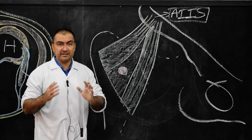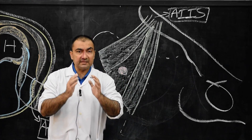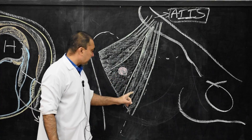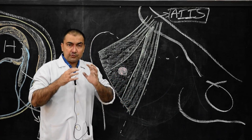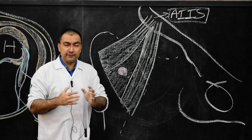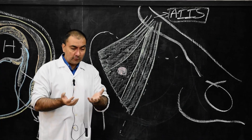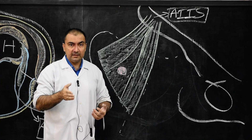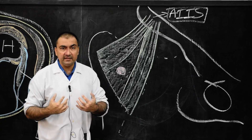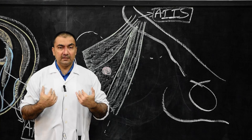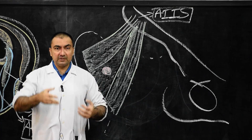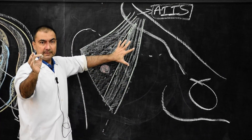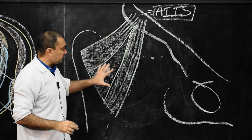The iliofemoral ligament prevents hyperextension of the hip joint. It also prevents the falling back of the pelvis, since the line of gravity passes behind the hip joint, creating a natural tendency for the pelvis to tilt back. This is resisted by the iliofemoral ligament.